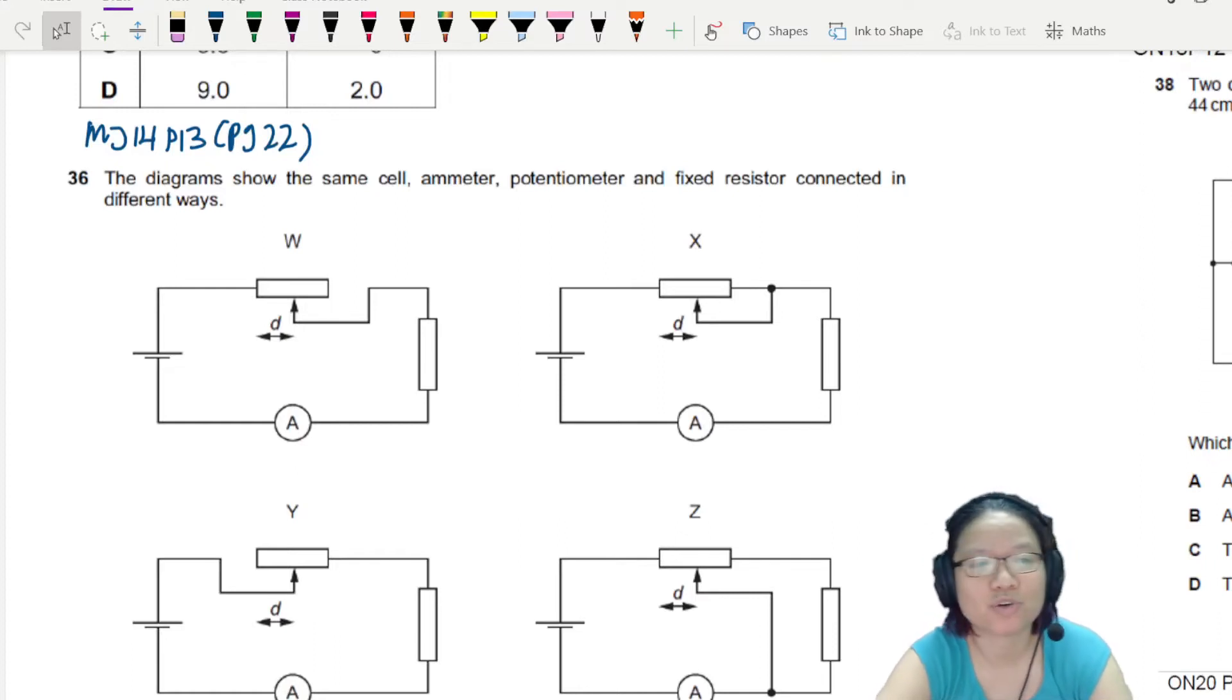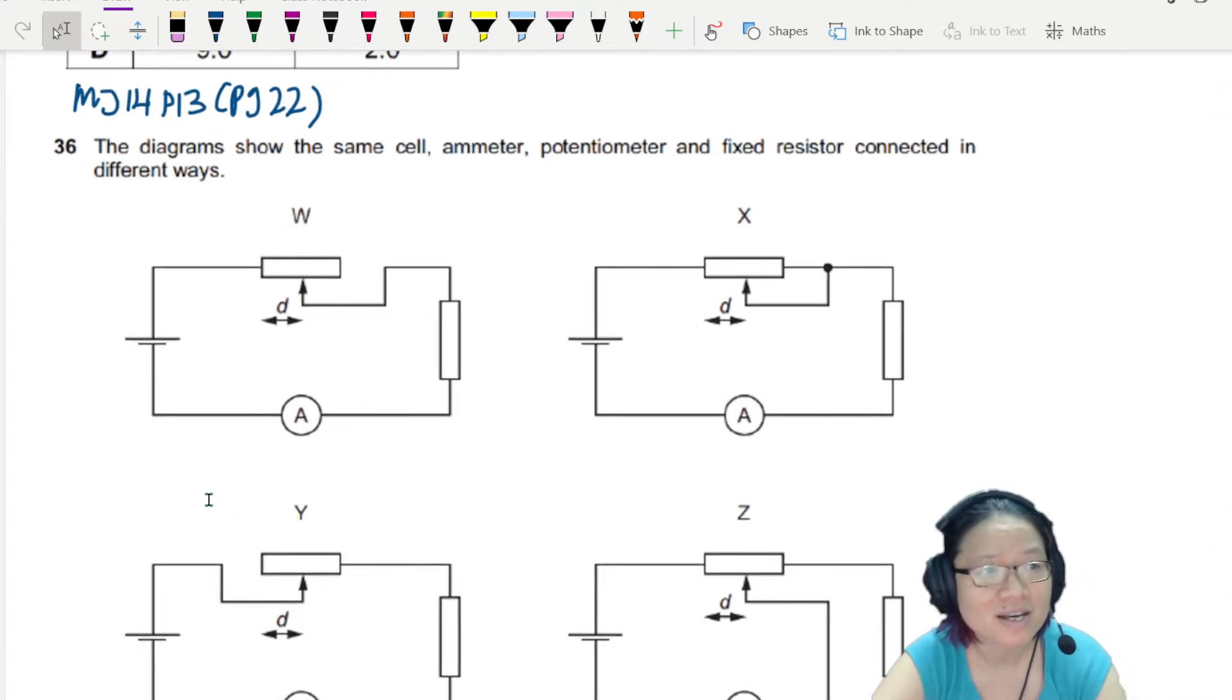This is an interesting one where you have to choose between different types of circuit. Let's read the question. This diagram shows the same cell, emitter, potential meter.